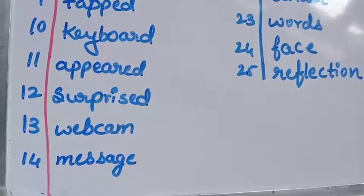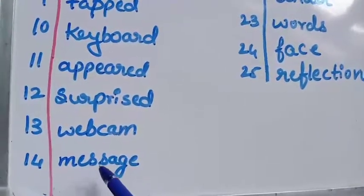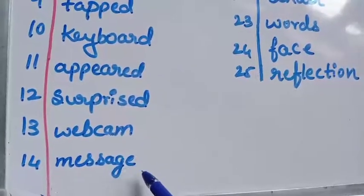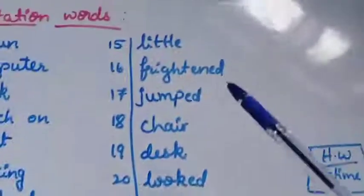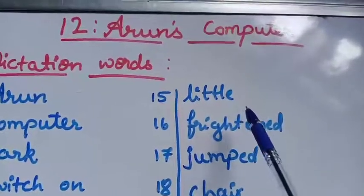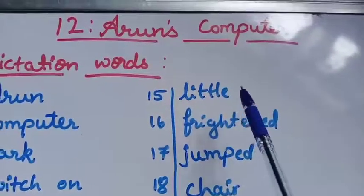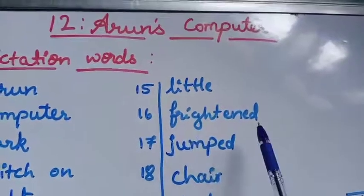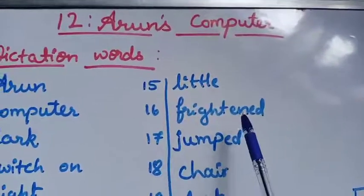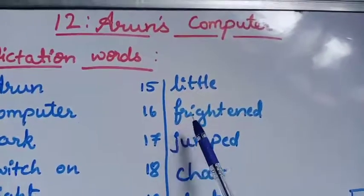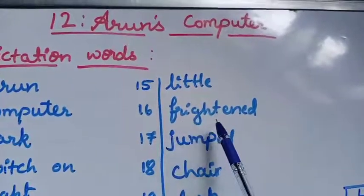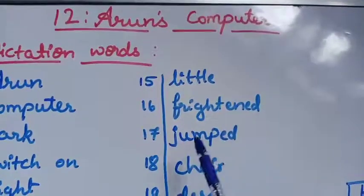Number 14. Message. M-E-S-S-A-G-E Message. M-E-S-S-A-G-E Message. Number 15. Little. L-I-T-T-L-E Little. L-I-T-T-L-E Little. Number 16. Frightened. You all know this word, isn't it children? But again you have to write in this lesson also. F-R-I-G-H-T-E-N-E-D Frightened. F-R-I-G-H-T-E-N-E-D Frightened.